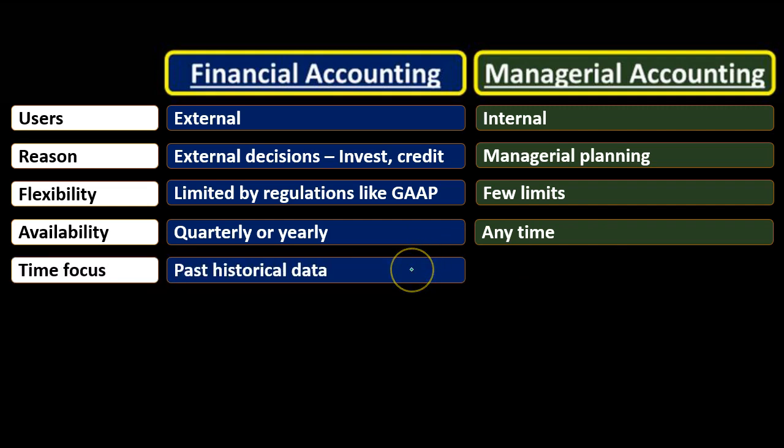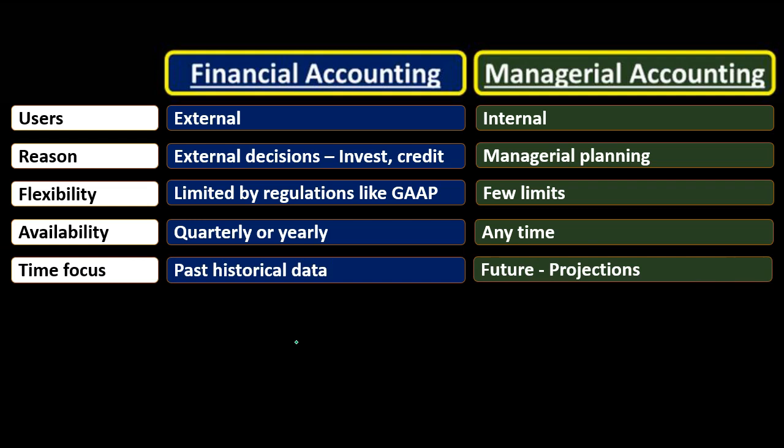The time focus for financial accounting is typically the past — we're looking at historical data. Investors may project into the future, but all financial statement preparation from the company side is geared towards what happened in the past, reported as accurately as possible, so investors can make future projections based on that. Managerial accounting, when we put information together, usually has a future focus — we're focused on future decision-making, thinking about what we can do internally to increase production and improve the future.